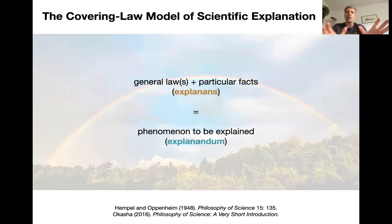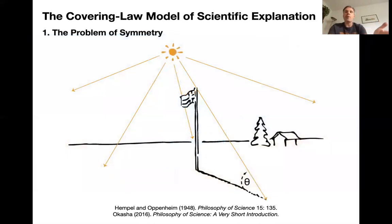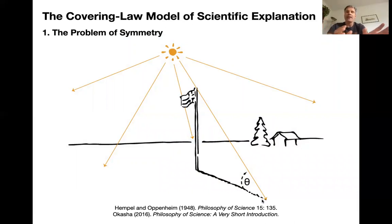But there are three reasons why this model doesn't apply in general — especially in biology and the social sciences. First, there's a problem with symmetry. Think of this situation: the sun is shining and there is a flag on a pole that casts a shadow. From measuring the length of the shadow and the angle, you can estimate the height of the pole by doing trigonometry — using general laws of optics and geometry to derive the height of the pole.